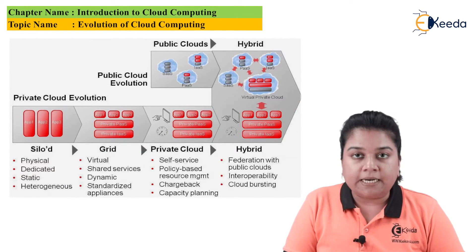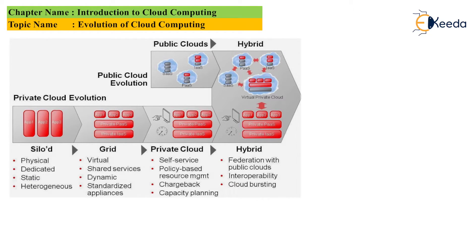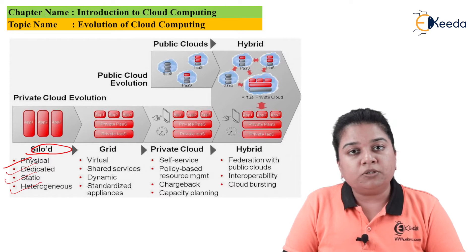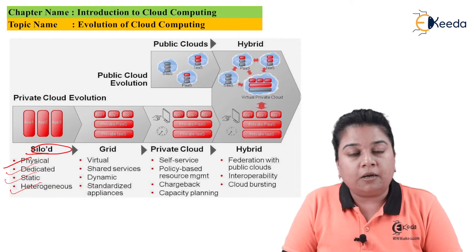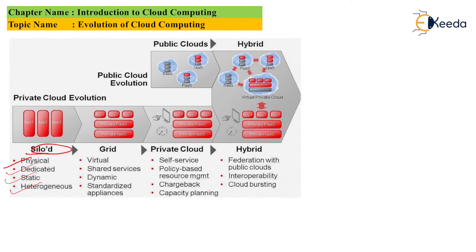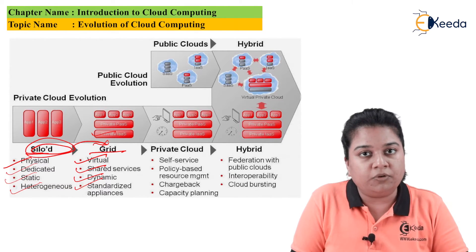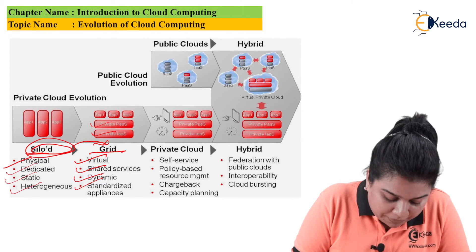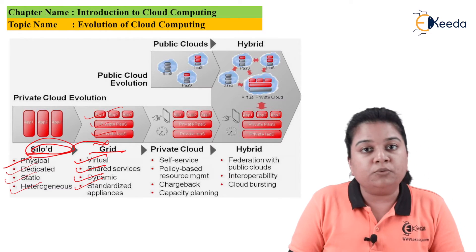Now, with the help of a diagram, we are going to understand the evolution of cloud computing. First, the private cloud evolution. IT companies were first working on siloed infrastructure, which means they were physical, dedicated, static, and heterogeneous. When companies did not want to share their data even with employees and did not want to reveal complete information, they used these siloed data centers. From siloed data centers, they moved on to the grid, which was virtual, shared services, dynamic, and had standardized applications. In grid computing, they had private infrastructure as a service, private platform as a service, and then software as a service.